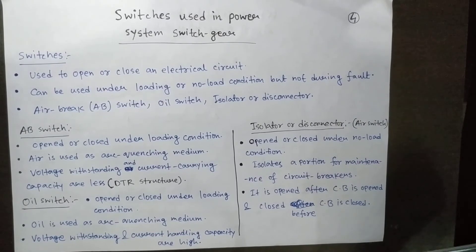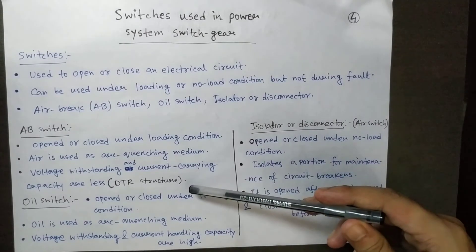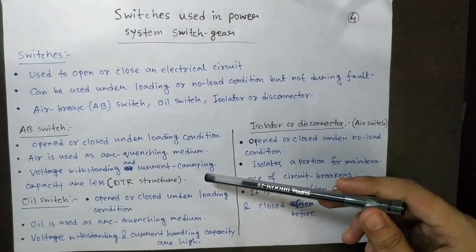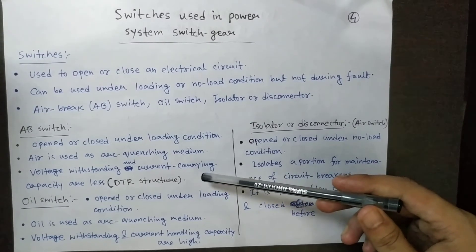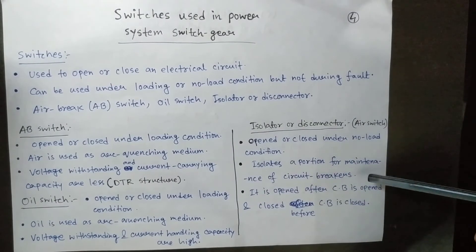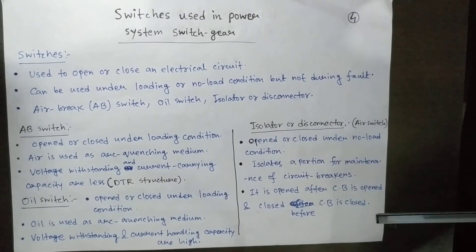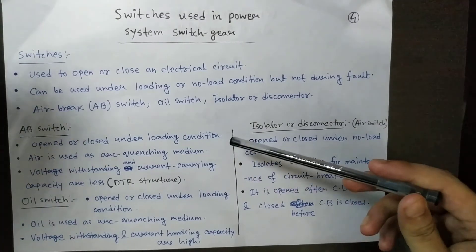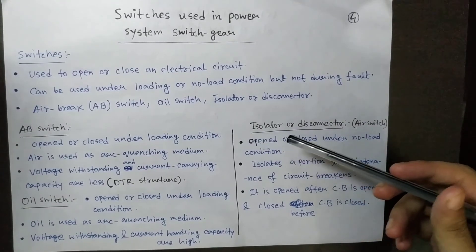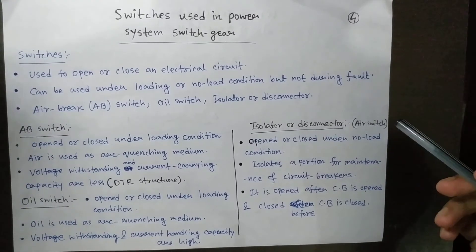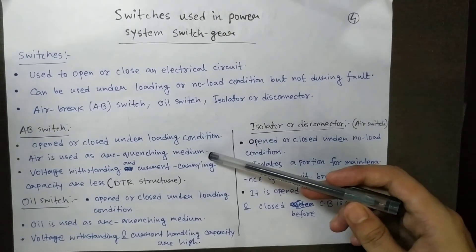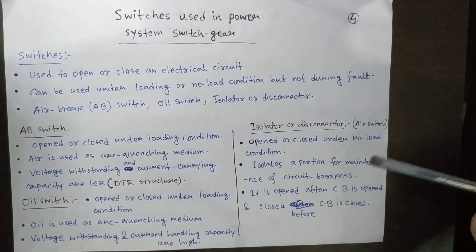The AV switch is mainly used in DTR structures whenever maintenance, replacement, checking, or repairing of transformers is needed. The isolator is mainly used with circuit breakers — when performing maintenance of circuit breakers, isolators are used. Both serve the same fundamental purpose of providing isolation, but one operates under loading conditions and the other only under no-load conditions.